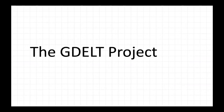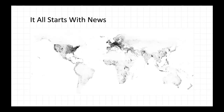The GDELT project is an open data project, jointly supported by Alphabet Jigsaw and Google Cloud. It's really about cataloging human society — reaching around the world into the news and creating this open, live catalog of society. It all starts with news, and this is a map of all the locations that GDELT drew news media from or about over the last three years.